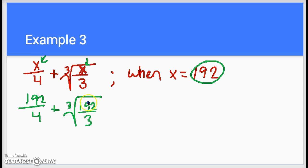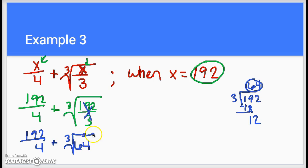Now the first thing I want to know is can I simplify this part, the 192 over 3? Can that go in evenly? So if I start to divide it, 3 goes into 19 six times, 3 goes into 12 four times. So I can simplify that fraction and make it 64. So now we have 192 over 4 plus the cube root of 64.